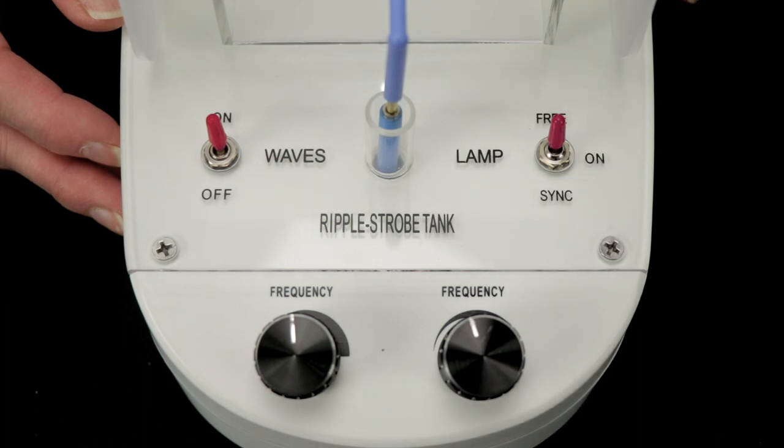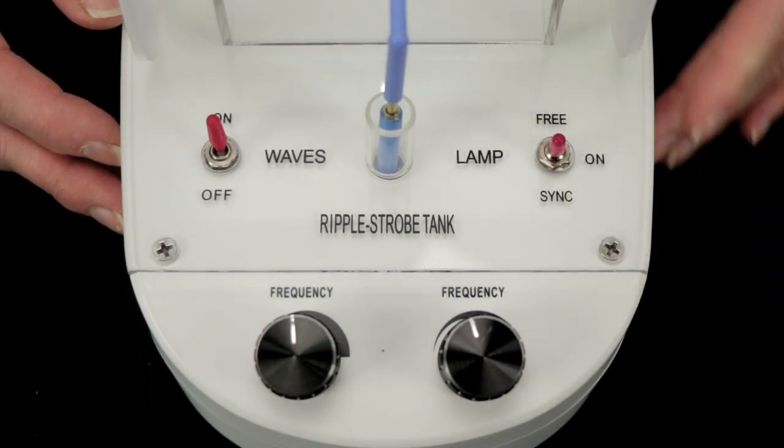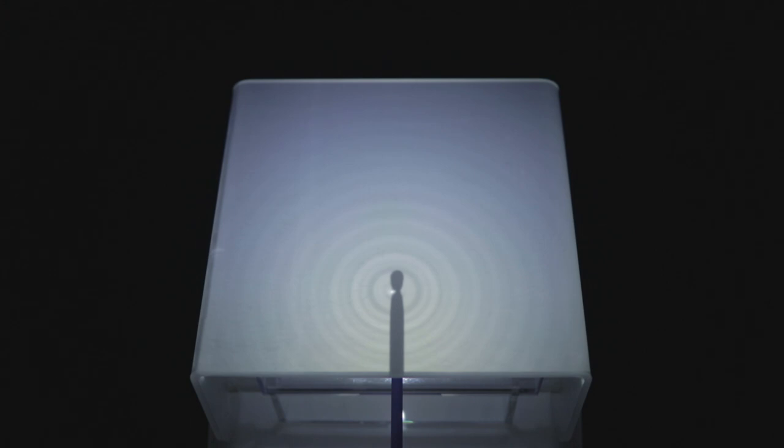To view the waves as stationary, flip the illumination switch to sync. This causes the light to flash at the same rate as the wave generator, which makes it possible to project stationary images onto the screen.